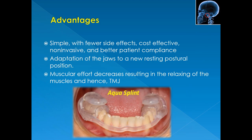Advantages of occlusal splints: this treatment option is simple with fewer side effects, cost effective, non-invasive, and has better patient compliance. Occlusal splints promote muscle relaxation by providing a platform for equal distribution of tooth contacts, immediate posterior tooth disclusion in all movements, and reduced stress on the joint, followed by neuromuscular harmony for optimal function and comfort. When a splint is inserted, there is adaptation of the jaw to a new resting postural position, decreasing muscular effort and resulting in relaxation of the muscles and hence the TMJ. Also shown here is a quad splint, also called a hydrostatic appliance, consisting of bilateral water-filled plastic chambers to equalize bite force, working on Pascal's law.